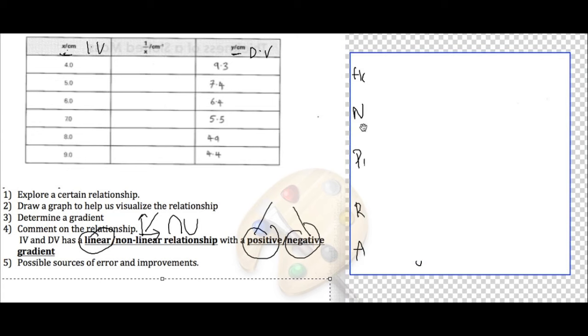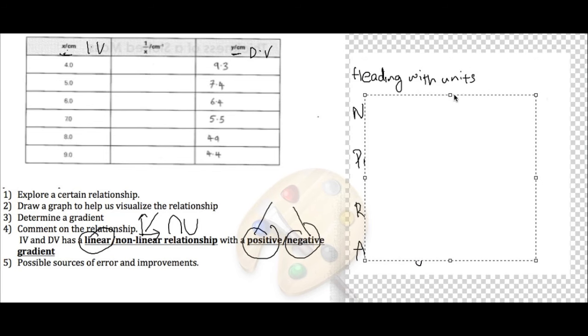In our school, we use HNPRA. What does H stand for, first and foremost? H stands for Heading with Units. In all experiments, please ensure when you record your data, you have the variable here, x slash followed by the units. All things that you record down in your data table must have this, Heading with Units.